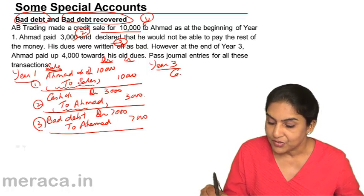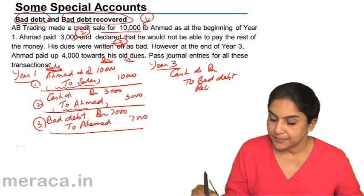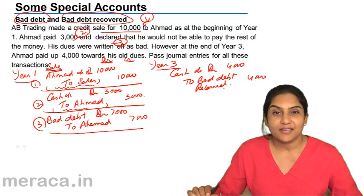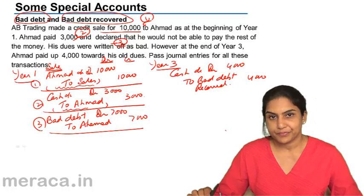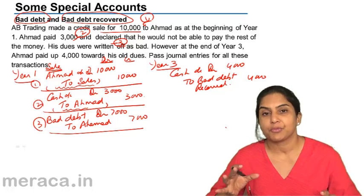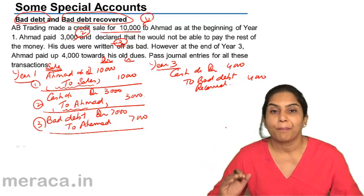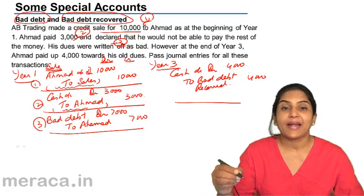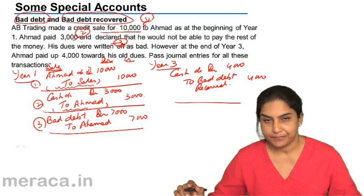The entry in year three when money is received: cash account debit, to bad debts recovered, amount of 4,000. Bad debts recovered is an income account — increase in income, we credit. Cash account is increase in asset, we debit. So, when there is a bad debt: bad debts account debit, to debtor. When bad debts are later recovered: cash account debit, to bad debts recovered account — an income or gain account. This is how bad debts and bad debt recovered are treated in the books of account. Bad debt is a loss; bad debt recovered is an income.